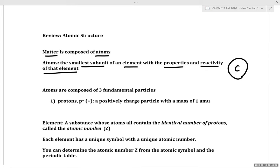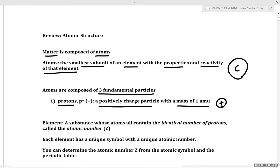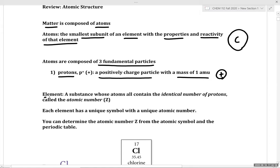Atoms are composed of smaller subatomic particles. The three fundamental subatomic particles are protons — a positively charged particle with a mass of 1 amu. An element's identity depends on the number of protons, also called the atomic number. Each element has a unique symbol, a unique atomic number, and a unique number of protons.